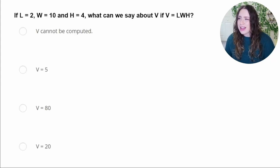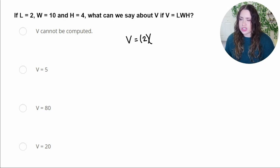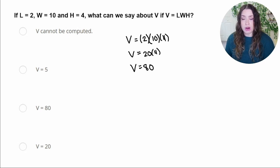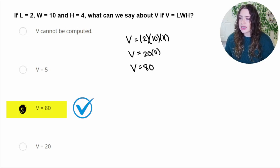Let's take a look at this problem. If L equals 2, W equals 10, and H equals 4, what can we say about V if V equals LWH? So this is V for volume, and volume equals length times width times height. So what we need to do is substitute each of these values into this equation and evaluate. So volume equals L, which length is 2, times the width, which is 10, times the height, which is 4. So we can just multiply all of those together. So 2 times 10 is 20, and then we still need to multiply by 4, and 20 times 4 is going to be 80. So our volume should be 80, which we can see is this correct answer right here.